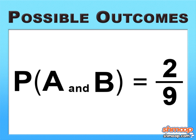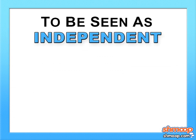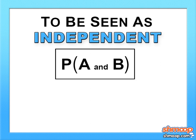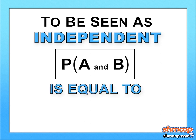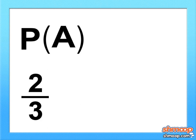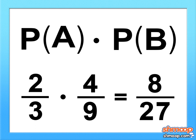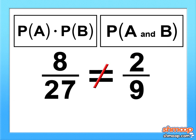They don't just make these things easy. Maybe you should just take what's behind curtain number 2. But what we really want to know is whether these events are independent or dependent. Remember, the only way these two events can be seen as independent is if the probability of A and B equals the probability of A times the probability of B. 2/3 times 4/9 comes out to 8/27, which does not equal the probability of A and B, which is 2/9. Therefore, the events are dependent.